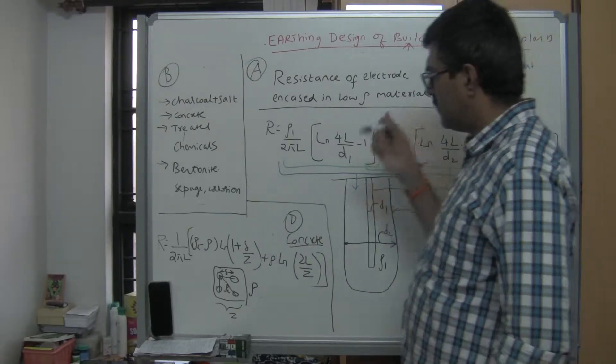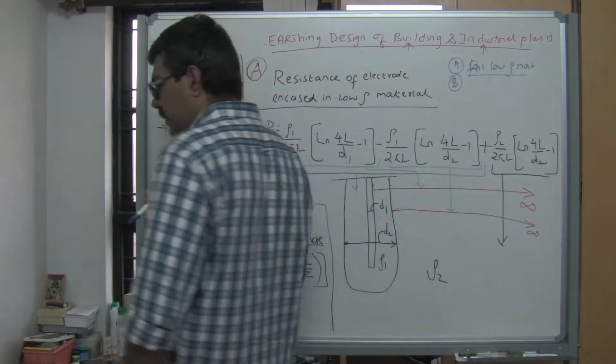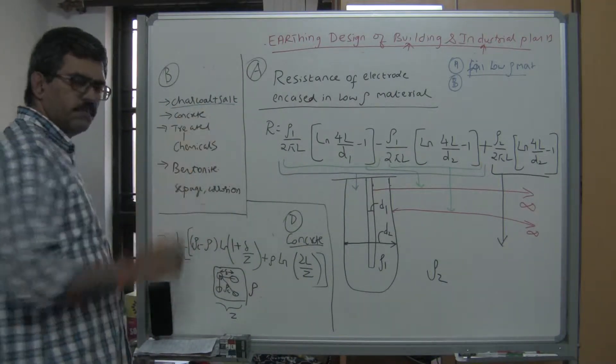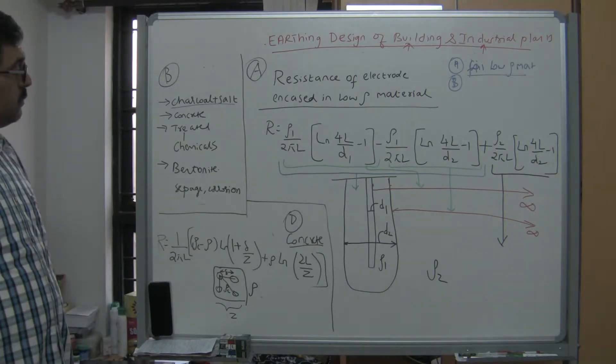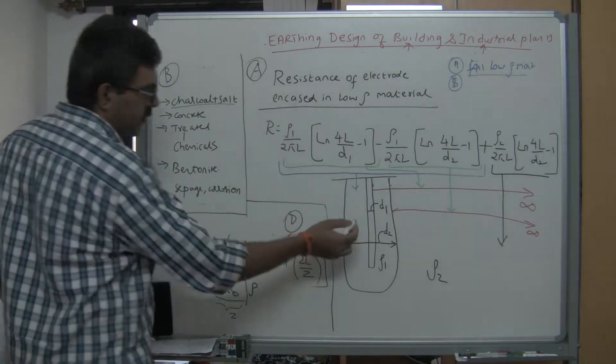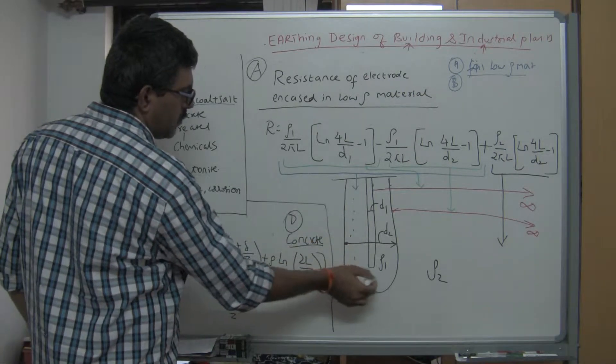You have different types of low resistivity material that you can fill. One is charcoal and salt, but this will lead to a lot of corrosion of the electrode. If you fill charcoal and salt around your electrode, it will undergo significant corrosion.